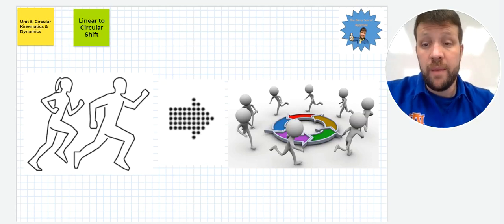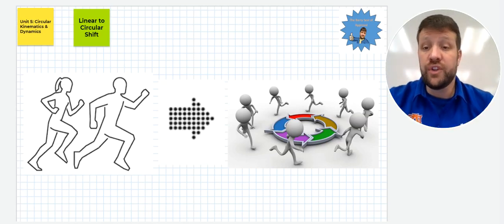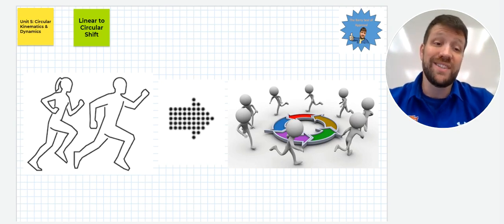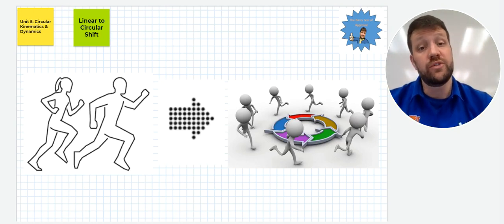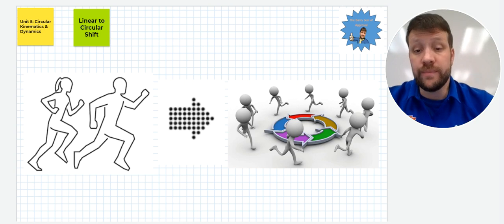All right. Hey, y'all. It's Barry. I'm here to talk about AP Physics Unit 5, Circular Kinematics and Dynamics. I'm going to do a quick summary here of the whole unit. We're going to roll through things quickly, and I'm going to get right to it.